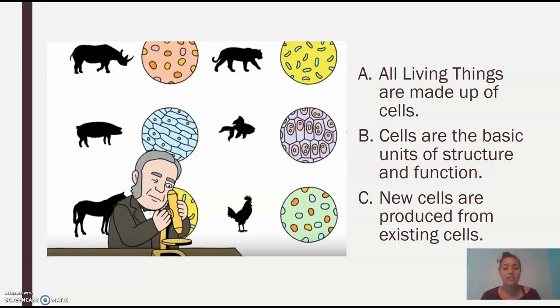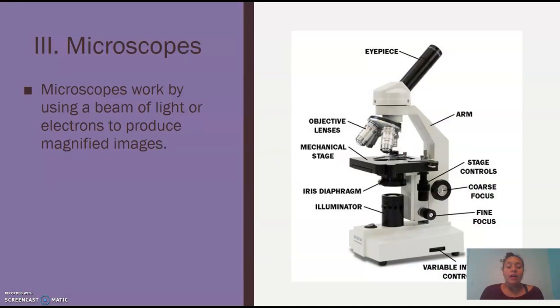So all living things are made up of cells. Cells are basic units of structure and function. And new cells are produced from existing cells. Okay. So that's it for then. You'll also go into more of the history of it on Wednesday.